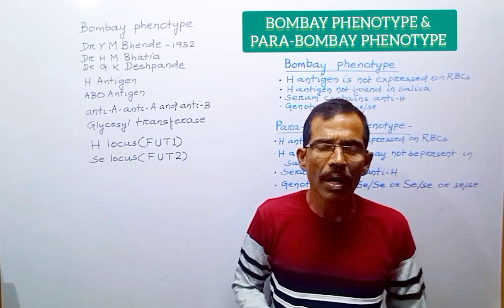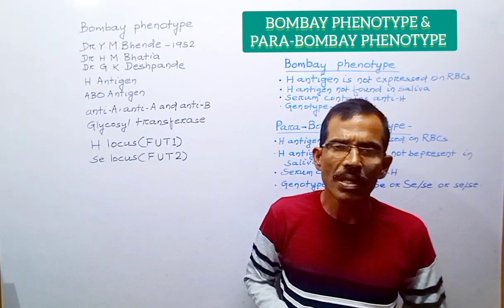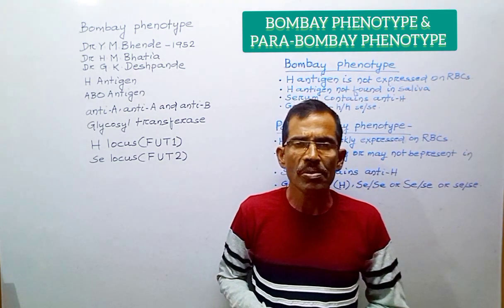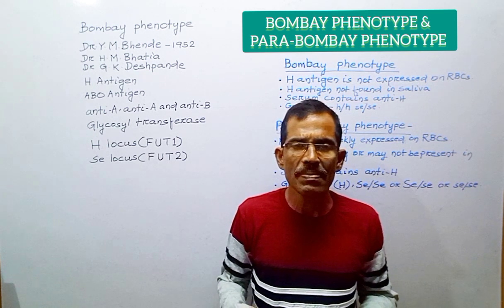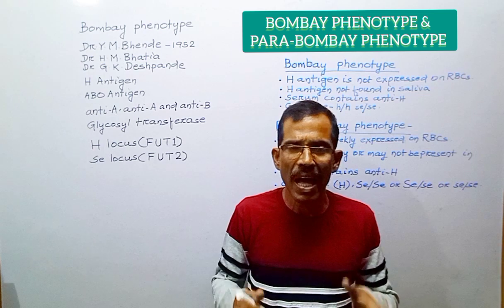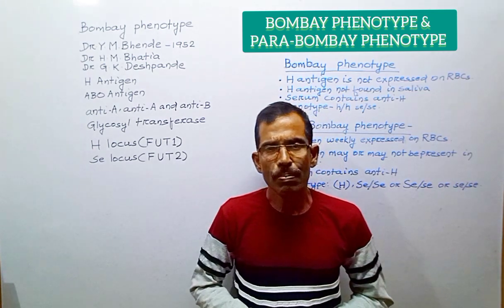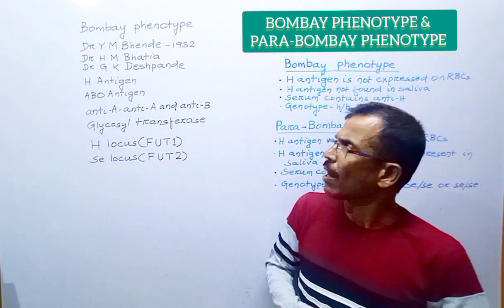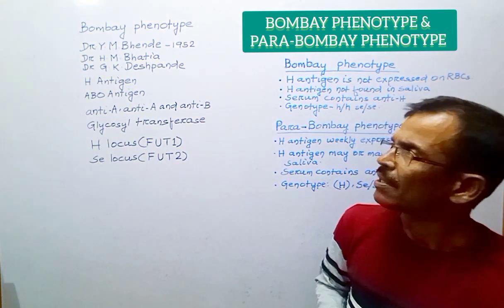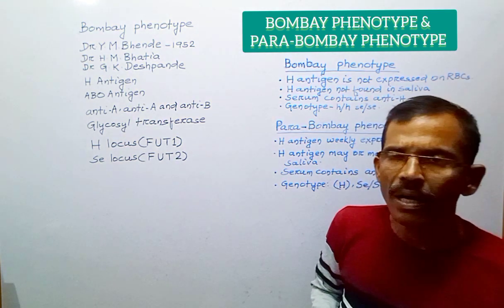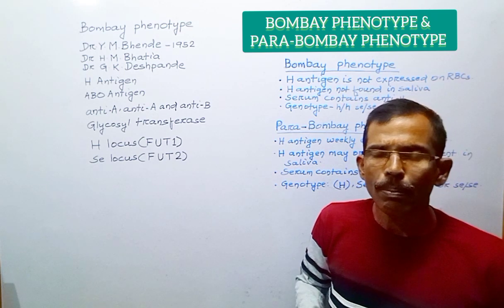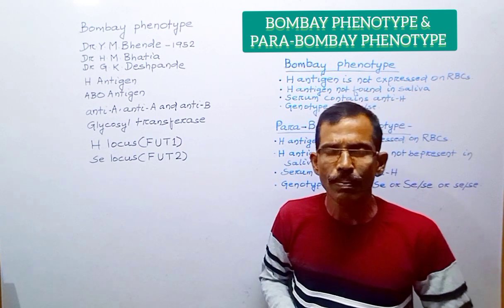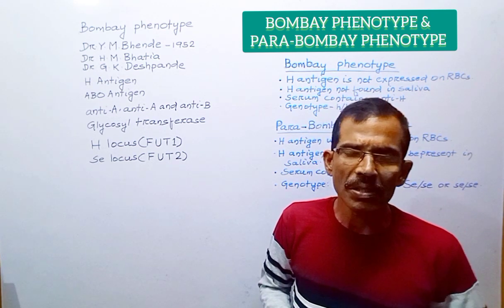Hello and welcome to Some Biology Class. Today we shall discuss the Bombay phenotype, also known as the Bombay blood group, which describes individuals with red blood cells lacking the H antigen. This blood group, which is relatively rare, was first discovered by Dr. Y.M. Bhande along with colleagues Dr. H.M. Bhatia and Dr. G.K. Deshpande in Bombay, now known as Mumbai, India, in 1952.